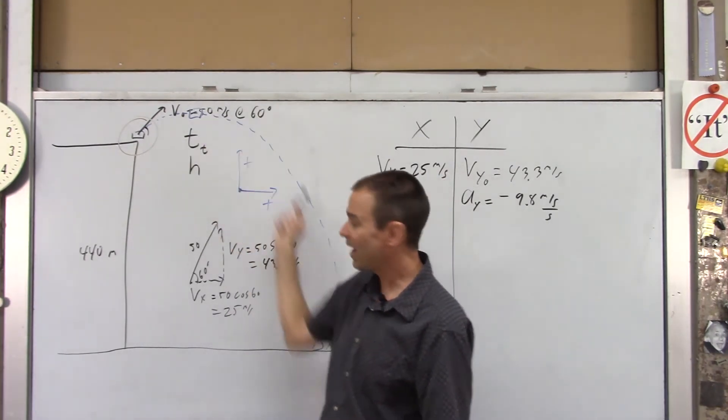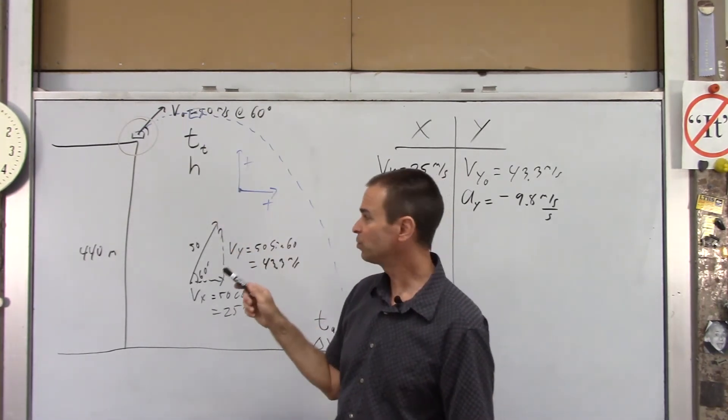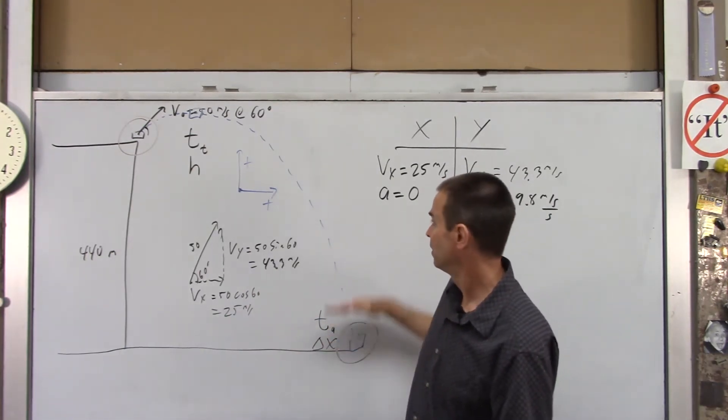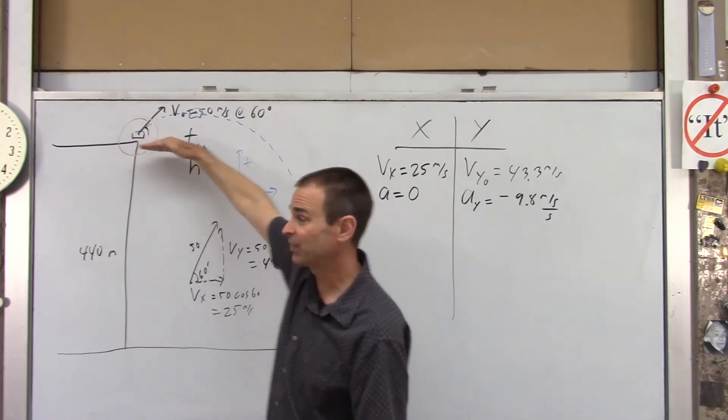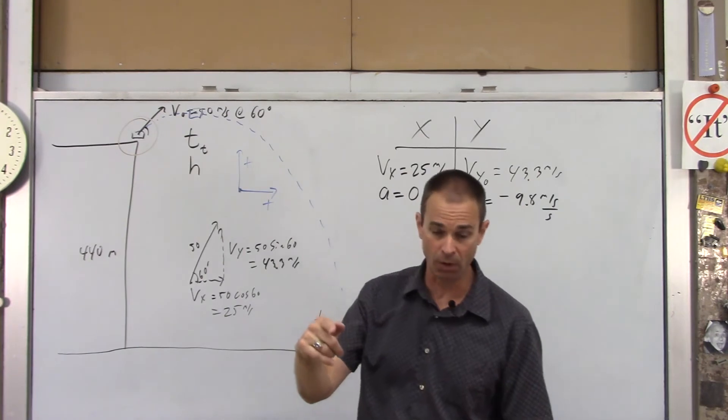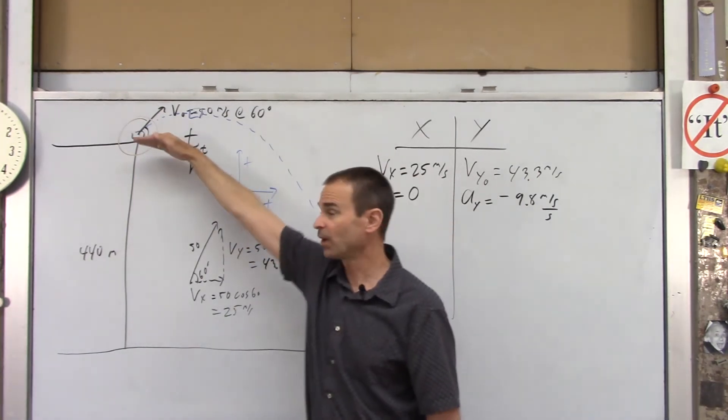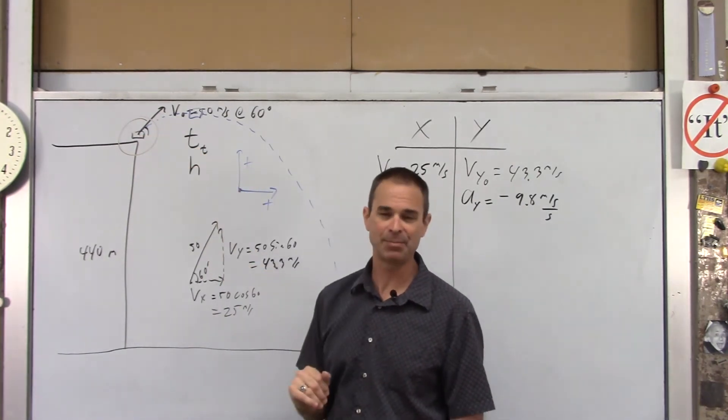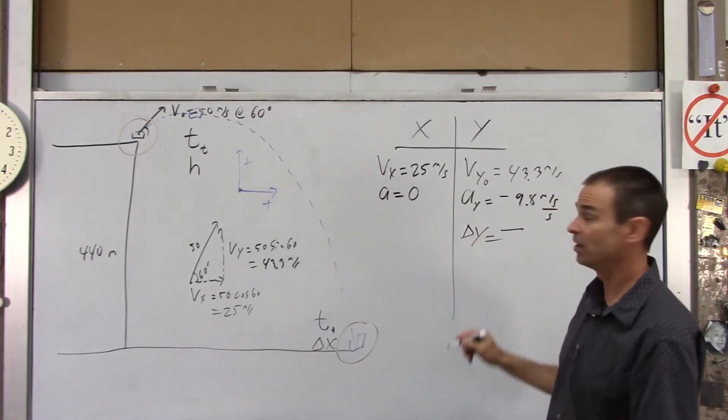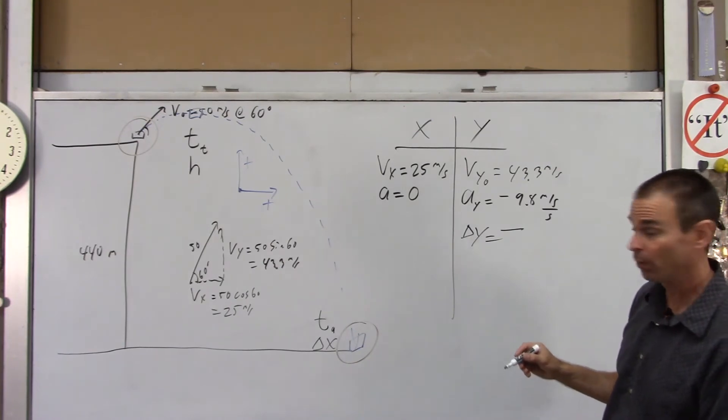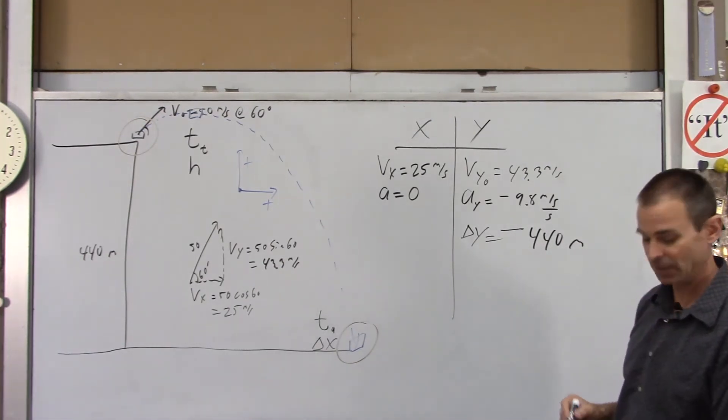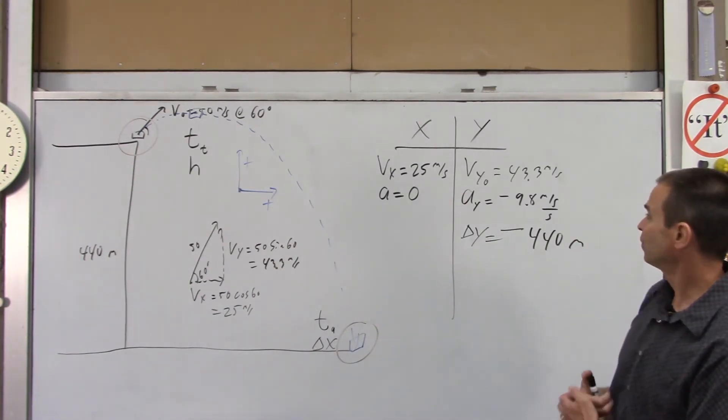Now, be careful. We're not asking how far it travels. That's a different number. We just want to know what's delta y. What's the vertical height at the end compared to the vertical height at the launch? Well, the vertical height at the end is 440 meters below where it starts from. You don't care what happens in between. So, delta y is negative because it ends up below where it started, 440 meters. So, now we know delta y.